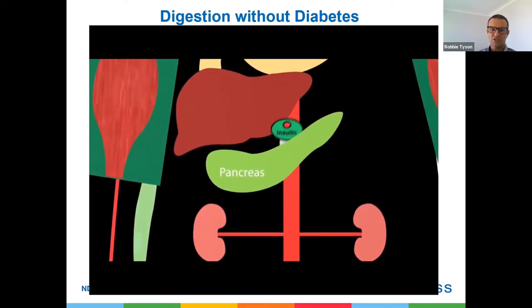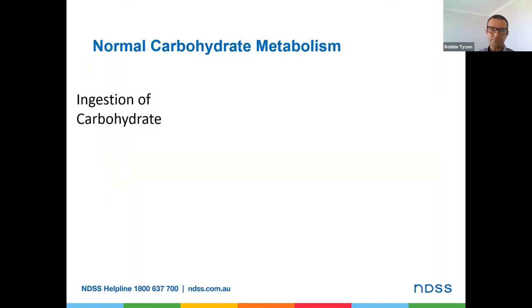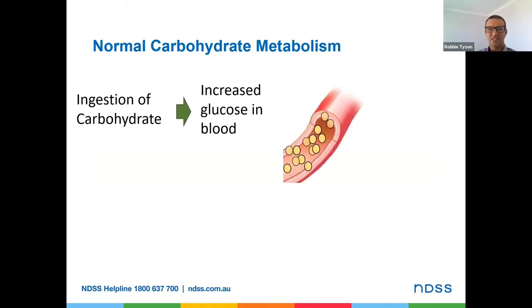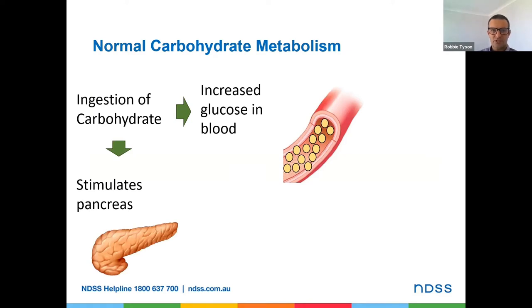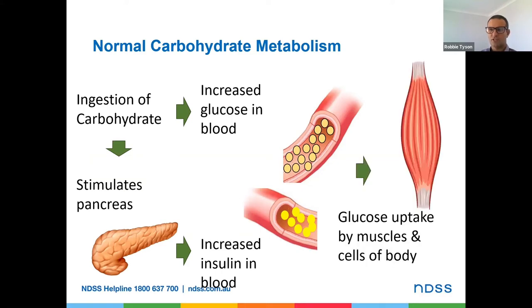The pancreas secretes insulin, and insulin's job is to get that glucose out of the blood. In normal carbohydrate metabolism, carbohydrates are ingested, there's an increase in blood glucose levels, and carbohydrates break down to glucose — only glucose can exist in the blood in terms of all forms of sugar. The pancreas then stimulates the release of insulin, with an increased amount of insulin in the blood to cope with the amount of glucose that's entered, and glucose is taken up by the muscles and cells of the body for conversion to energy.